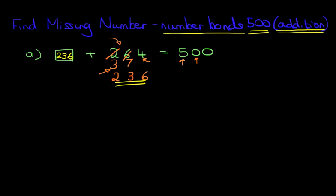I'm going to now look at a second example. This time we have 357 plus something equals 500. Number bonds to 500. So now we've got number 357. What number are we going to add to this to give us 500?